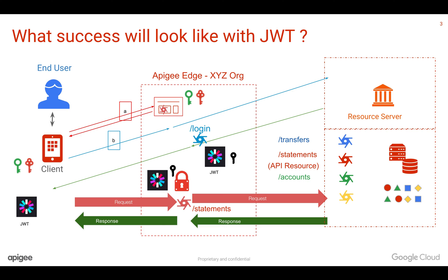This looks exactly similar to what we discussed in an earlier season on OAuth 2.0. But OAuth 2.0 is a framework and JWT is a token. We have seen access tokens in OAuth 2.0, and a JWT token can be used as an OAuth 2.0 token. Do not compare OAuth 2.0 versus JWT — that's like comparing apples and apple carts.